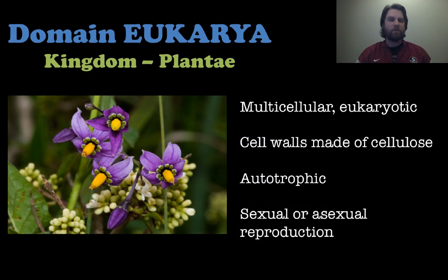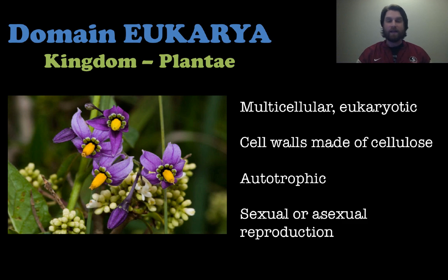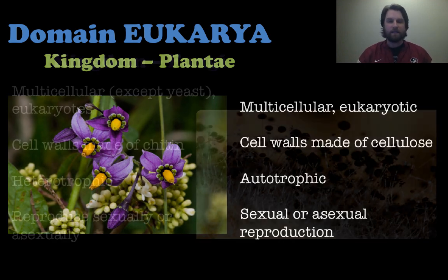Let's start with kingdom plantae in domain eukarya. Everything in eukarya is eukaryotic, so no surprise there. Plants are multicellular and eukaryotic. The cell walls in plants are made of cellulose. Plants are autotrophic — they make their own energy and food. And there is both sexual and asexual reproduction across all the different types of plants in the kingdom.